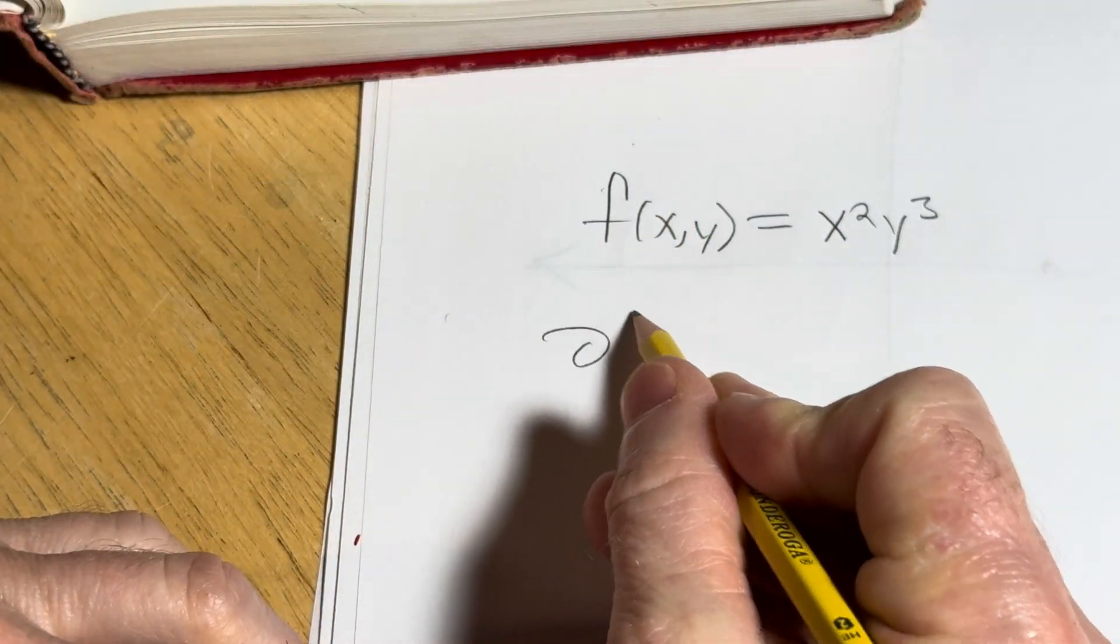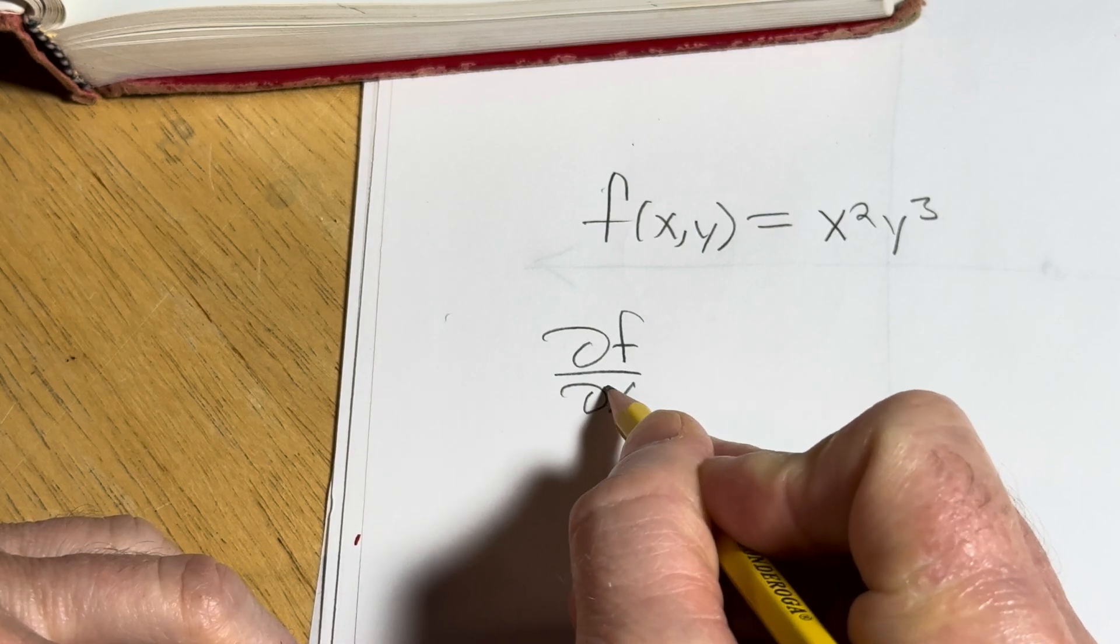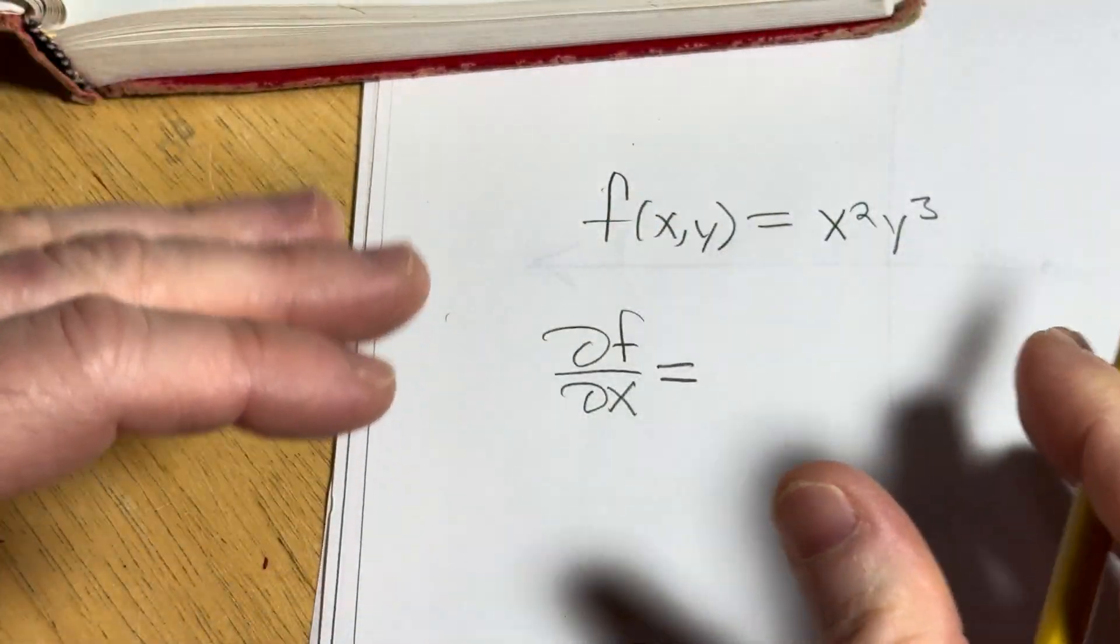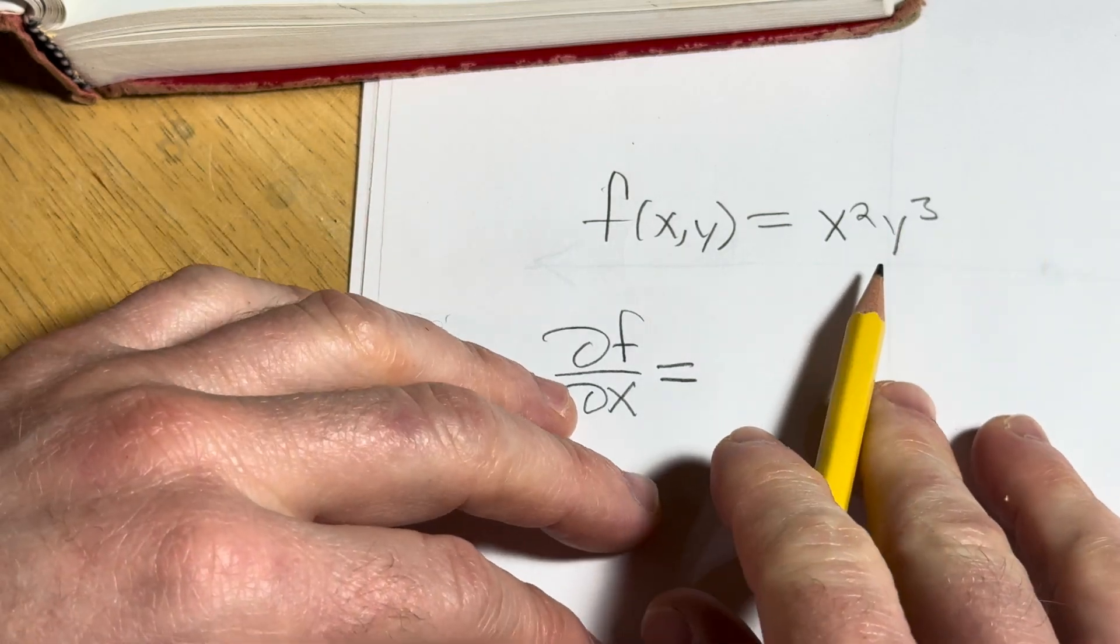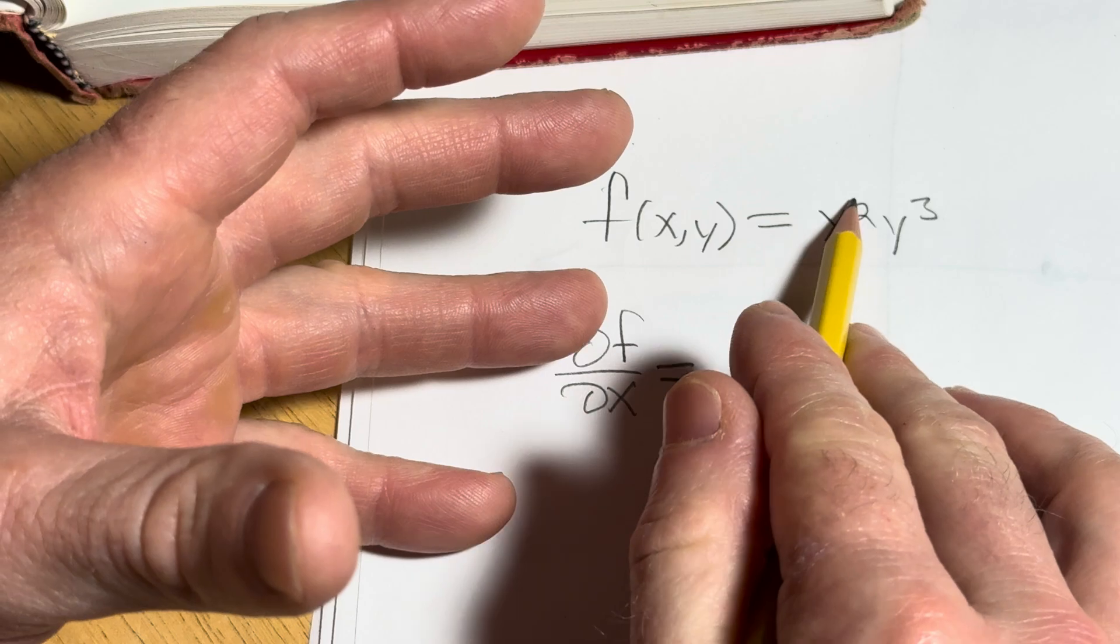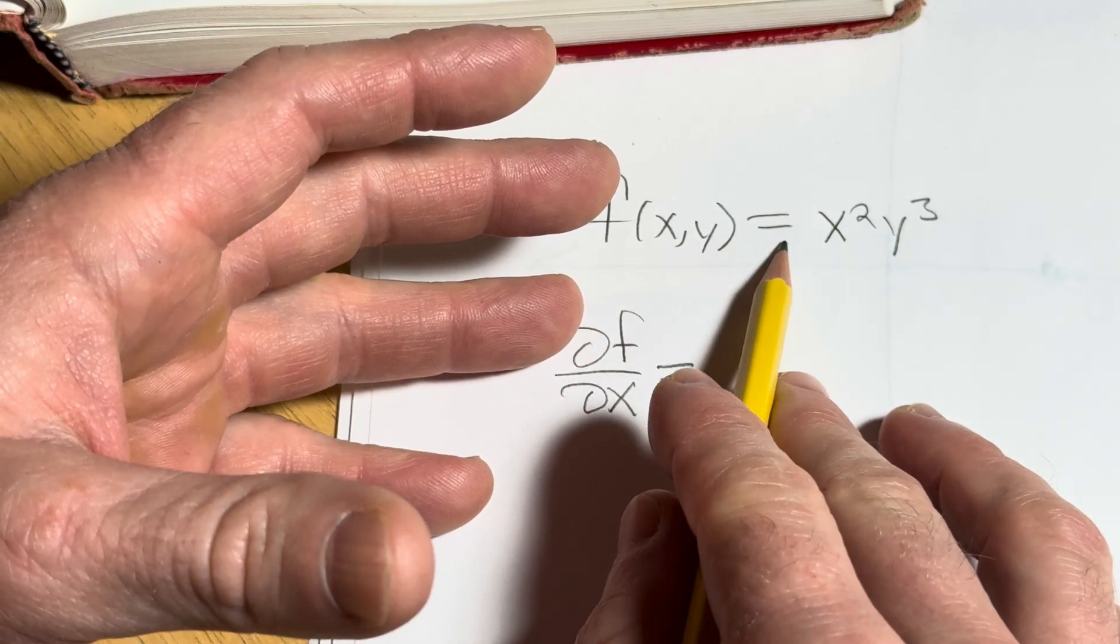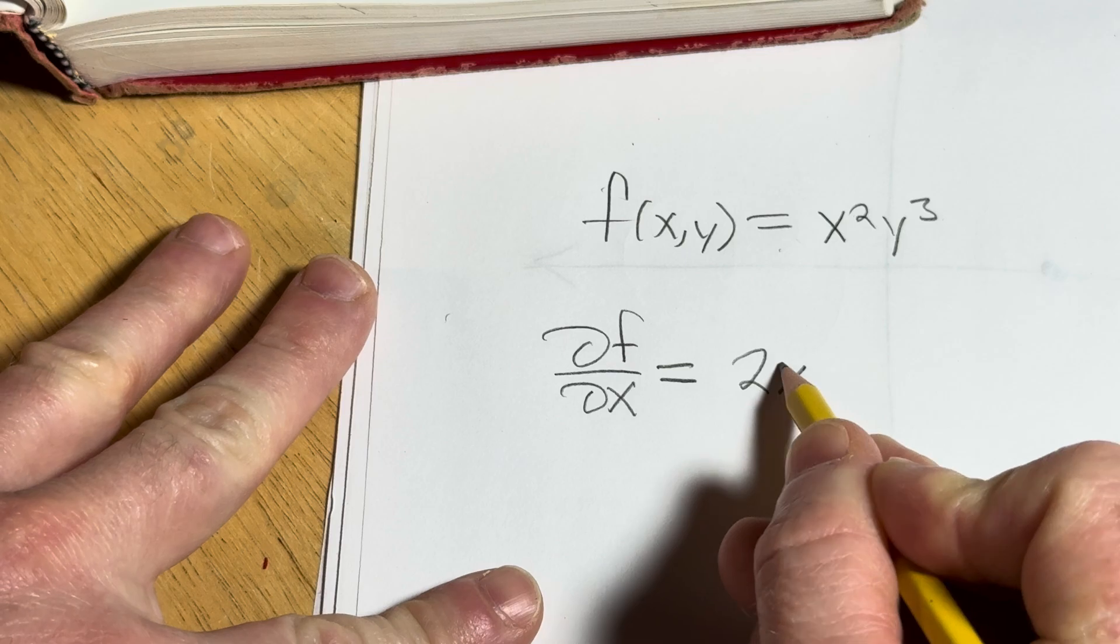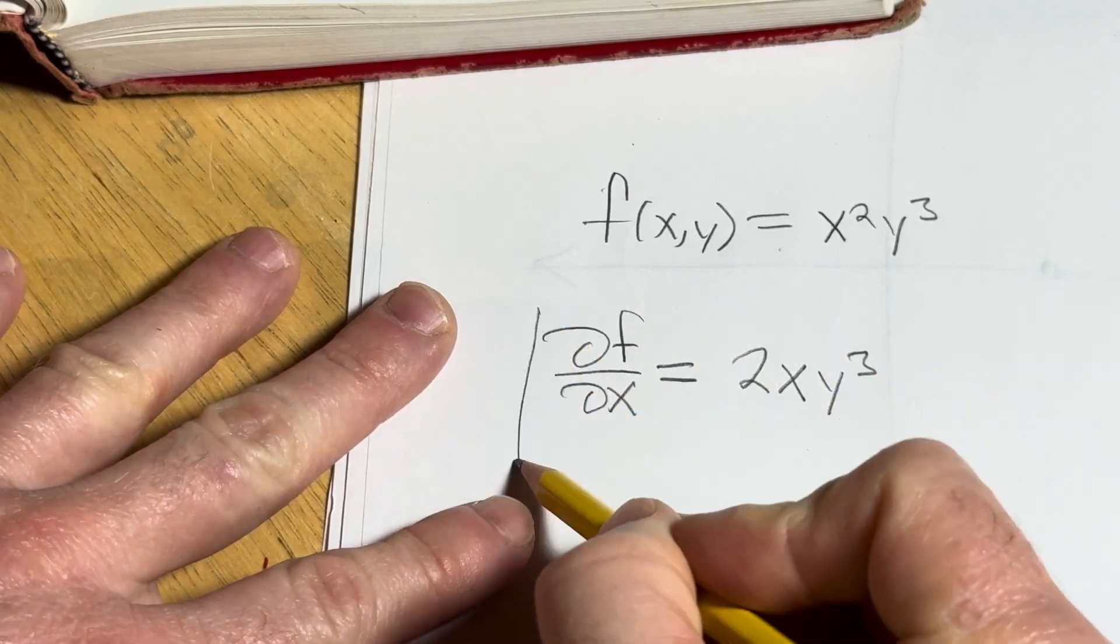And so we want the partial derivative of this function. Okay. So that's del f, del x with respect to x. That means we treat all the other variables as constants. So in this particular case, we're going to treat the y variable as a constant. So it just hangs out. So we're just going to differentiate the x squared. We'll use the power rule, right? You bring down the 2, subtract 1 from the exponent. So you just get 2x, and then this constant hangs out. Boom. There it is.